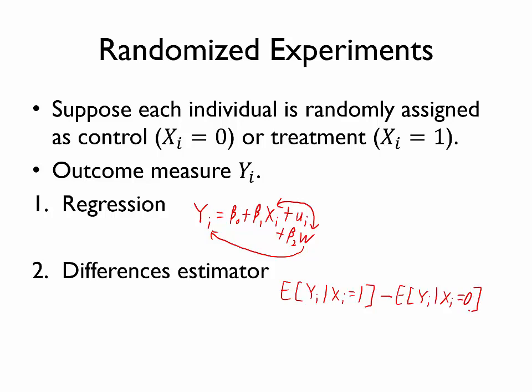So notice that essentially what we're doing to calculate this difference in expected values is to calculate the difference in the average outcome between those members of the treatment group and the average for those members of the control group. But also thinking back to what happens in a regression when you regress Y on a dummy variable X,